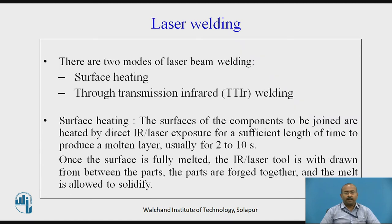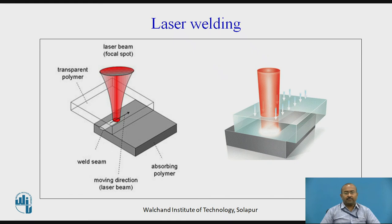The second type is laser welding. There are two modes of laser beam welding: first is surface heating, and second is through transmission infrared, well known as TTIR welding. In surface heating, the surfaces of the components to be joined are heated by direct laser exposure for a sufficient length of time — usually 2 to 10 seconds — to produce a molten layer. Once the surface is fully melted, the laser tool is withdrawn, the parts are forged together, and the melt is allowed to solidify. The laser beam is used to transfer heat energy to the expected surfaces, and heat energy generation can be very precisely controlled.